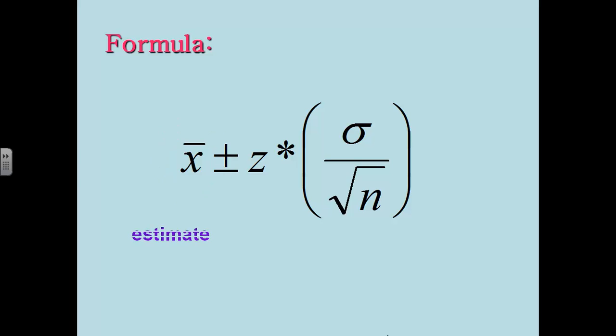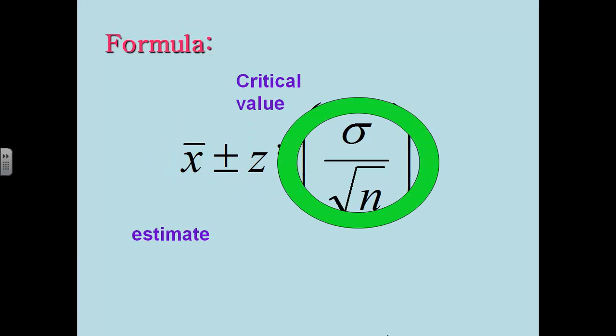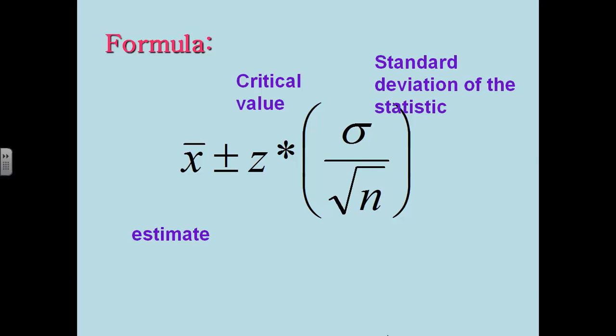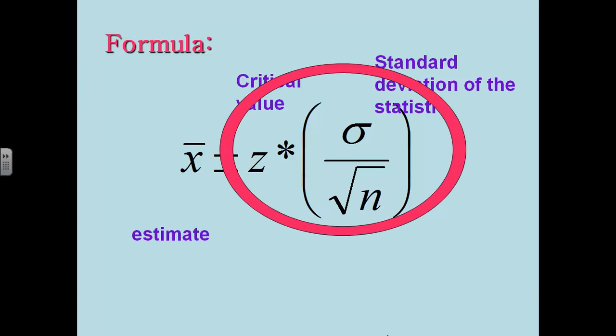So that is x bar, that's our estimate. Z star is our critical value, and then that is the standard deviation of the statistic. In this case the statistic is based on a mean of all California students, so we're going to use that formula. Put those two things together and that is of course your margin of error.